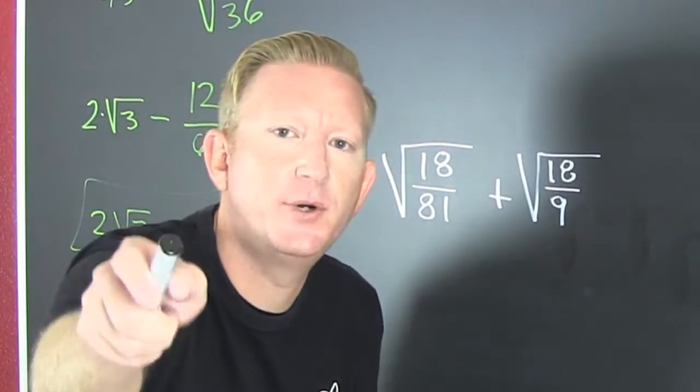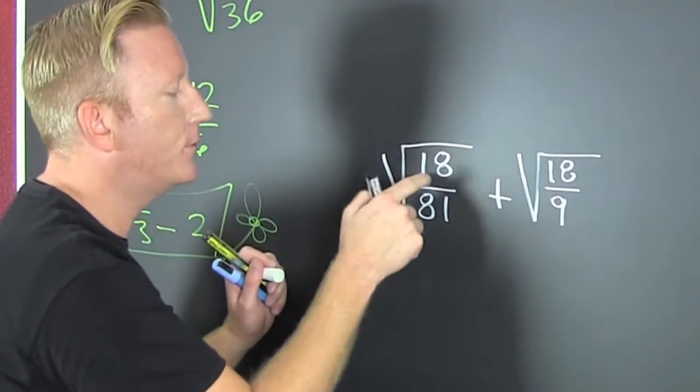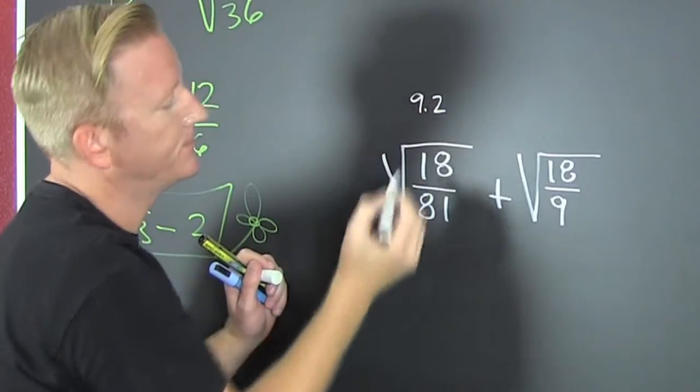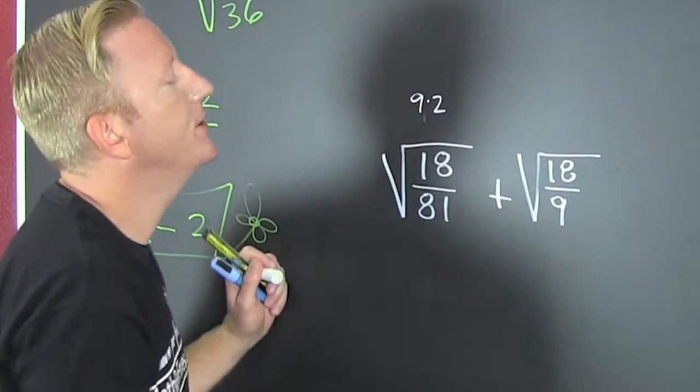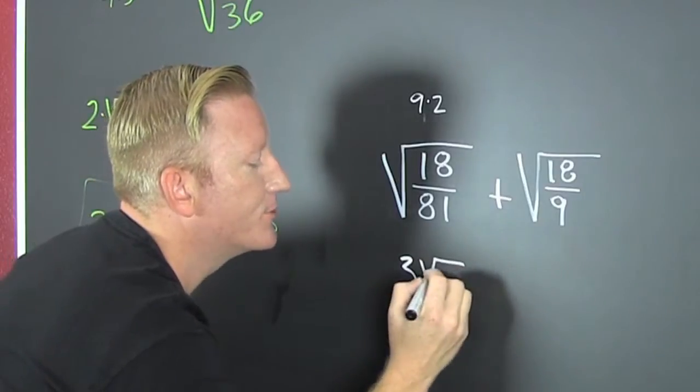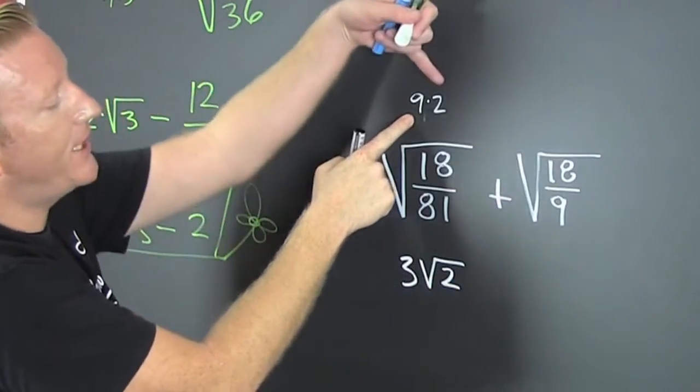Maybe we'll have some better luck on this one. 18 is 9 times 2. The square root of 9 is 3 times √2 because the 2 gotta stay inside because it ain't a square.